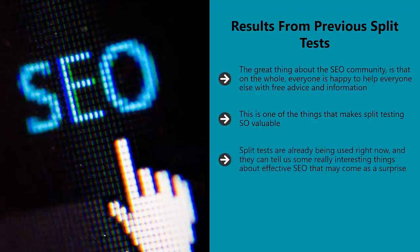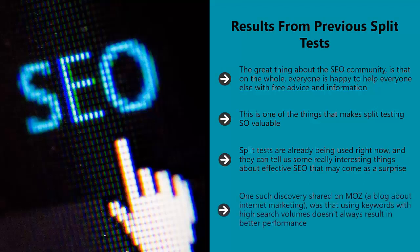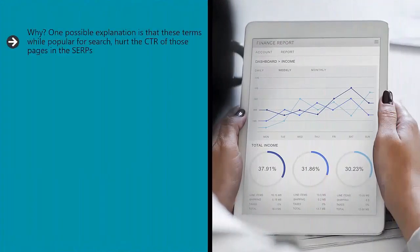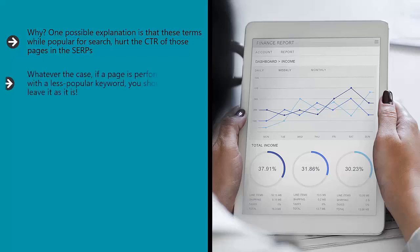Split tests are already being used right now and they can tell us some really interesting things about effective SEO that may come as a surprise. One such discovery shared on MOZ — a blog about internet marketing — was that using keywords with high search volumes doesn't always result in better performance. Will Critchlow tried inserting more popular key phrases into the meta tags and content of existing pages and found that in many cases those pages saw a drop in organic traffic of as much as 20%.